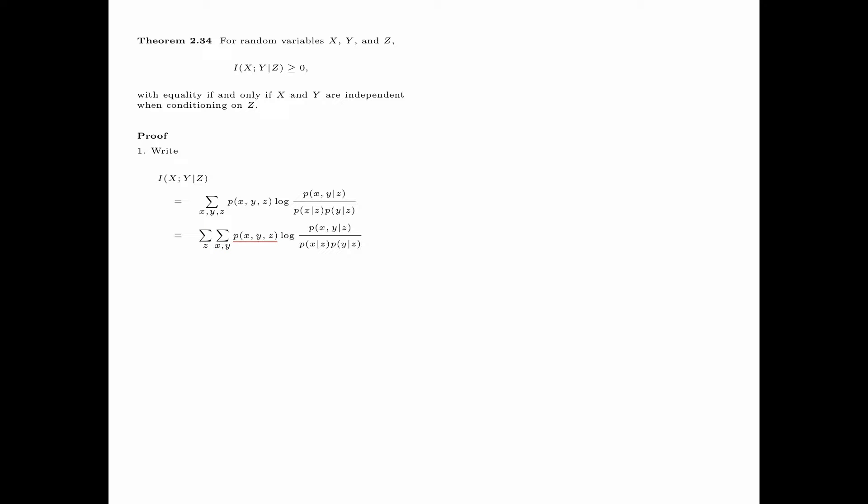Now we prove Theorem 2.34. First, we write I(X;Y|Z) as the summation over all X, Y, and Z of probability p(X,Y,Z) times log of p(X,Y|Z) divided by p(X|Z) times p(Y|Z). We then write the summation over all X, Y, and Z as a summation over Z and a summation over X, Y. Then p(X,Y,Z) is written as p(Z) times p(X,Y|Z).